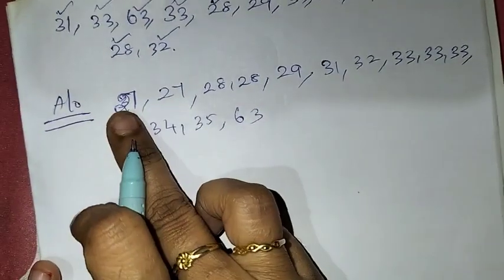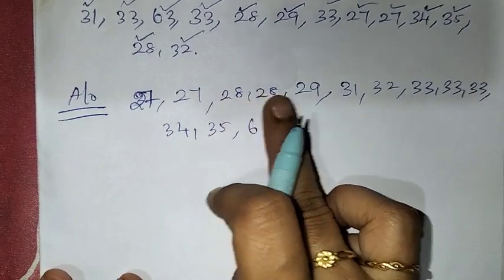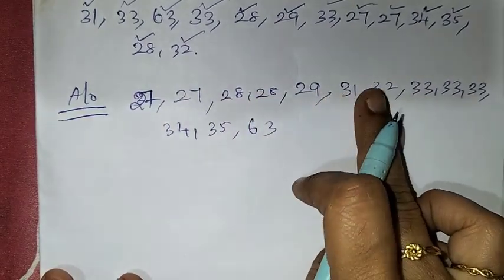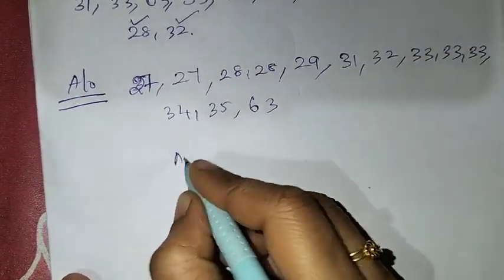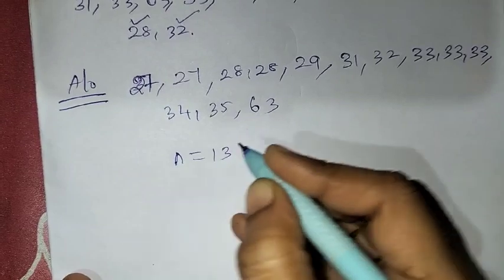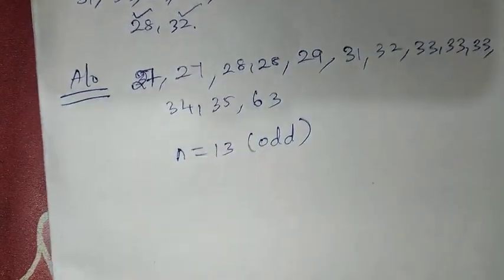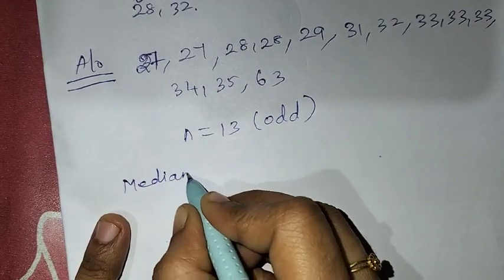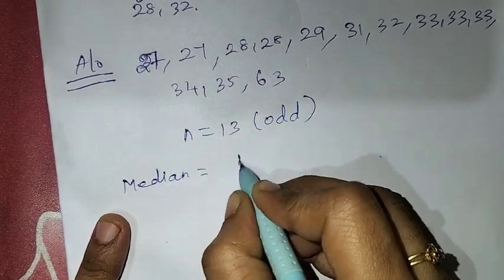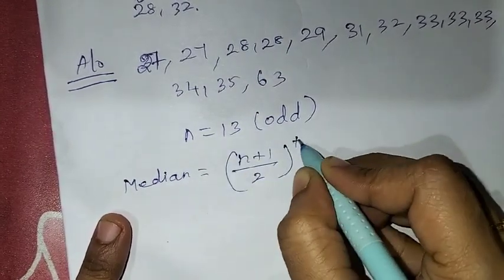Counting all values: 1, 2, 3, 4, 5, 6, 7, 8, 9, 10, 11, 12, 13. So N equals 13 observations, which is an odd number of terms. For an odd number of terms, the median formula is the (N+1)/2 th term.